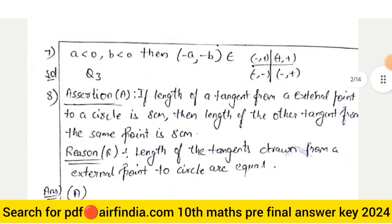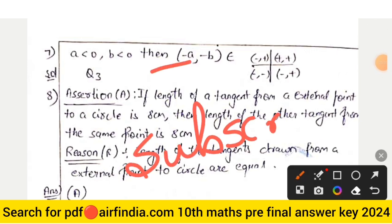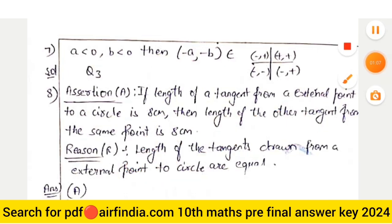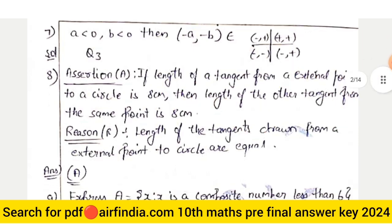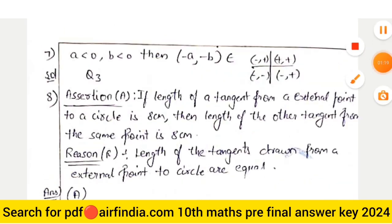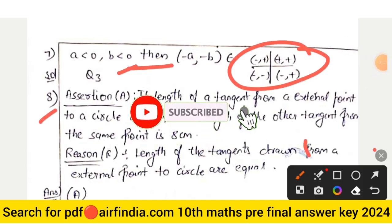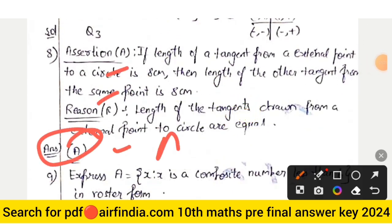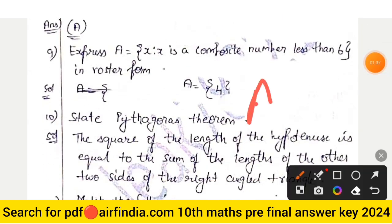Question number 7 answer — don't forget to subscribe our channel, hit the like button, and share this video with your friends. If you want to download this question paper PDF, search arapnda.com on Google and type '10th maths pre-final answer key 2024'. Question number 8 assertion: A and R answer is option number A. Question number 9: A is equal to 4.